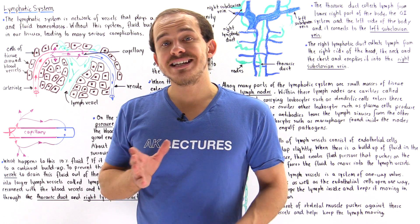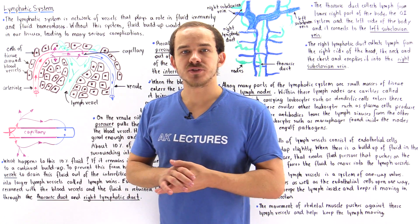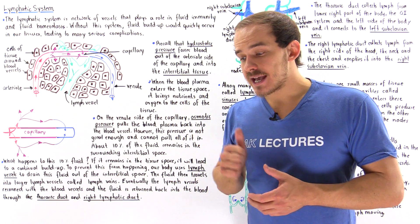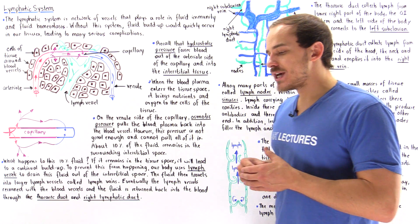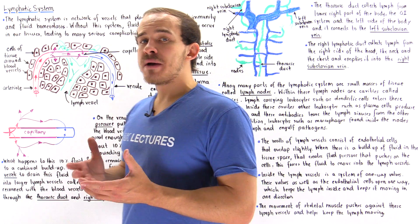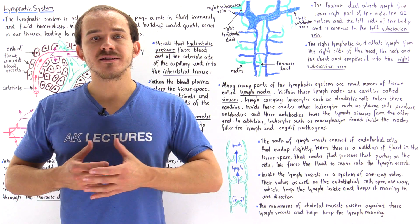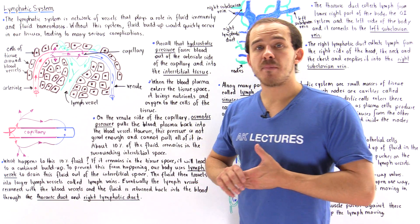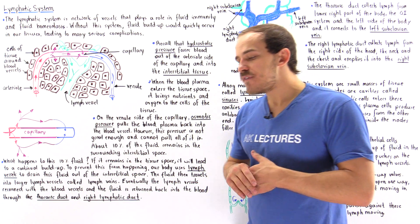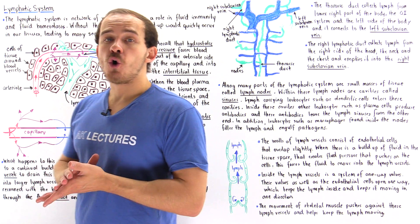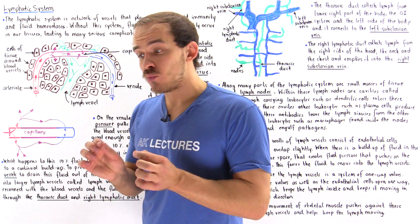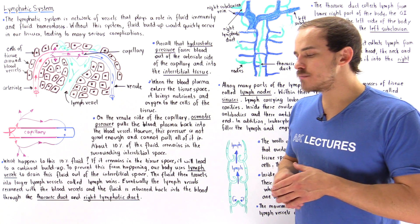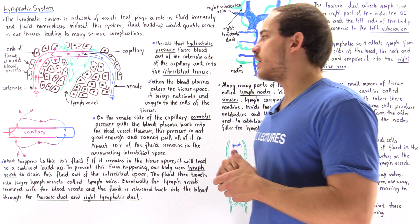The lymphatic system is a network of specialized vessels that plays two important roles. Firstly, it protects our body from different pathogenic infections and filters our blood from pathogenic agents that can cause harm to our body and the cells of our body. And secondly, the lymphatic system also maintains fluid homeostasis — specifically, it prevents the buildup of fluid from taking place inside the tissues of our body.